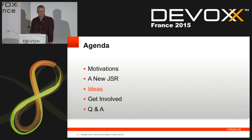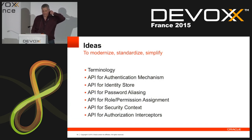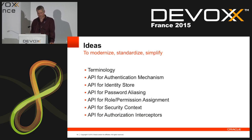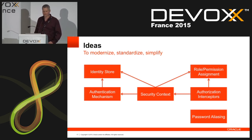Which brings us to our next section: the ideas. These are all just general ideas. The ideas are broken up into different categories: terminology, APIs for the authentication mechanism (which is the login mechanism), identity store, password aliasing, role permission assignment, security context, and authorization interceptors. An authentication mechanism needs an identity store to get its identities. You have role permission assignment, which is used by the authorization interceptors to figure out what the permission assignments are. Then you have a security context, which gives you direct access to different areas of the current security framework. And password aliasing is related to configuration.